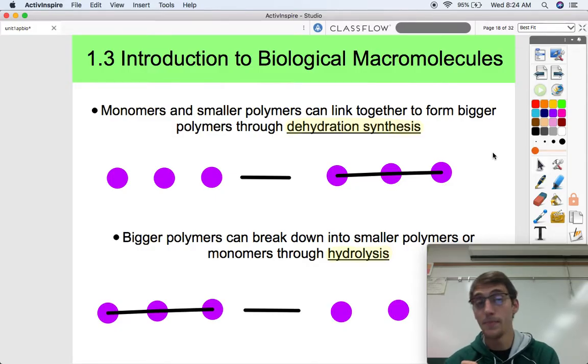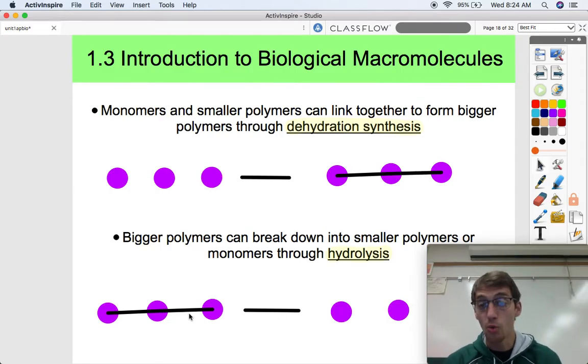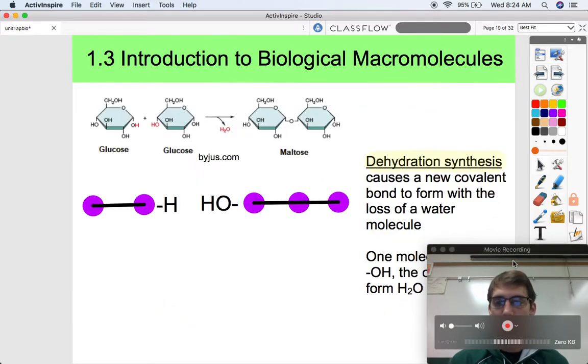There's two main processes that I'm going to be asking you to know, I'm going to be referring to them a lot throughout this year. So monomers and smaller polymers can link together to form bigger polymers through a process called dehydration synthesis. And hydrolysis is the process through which bigger polymers can break down into smaller polymers or back into their monomers. Dehydration synthesis takes these monomers and makes them into a polymer, and hydrolysis is able to take this polymer and put them back into monomers.